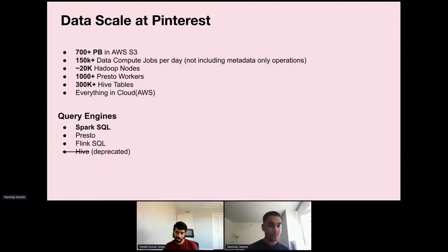To get started, one of the most interesting things is definitely the scale at which we operate. At Pinterest we have over 700 petabytes of data which is all in AWS S3. We roughly run more than 150,000 data compute jobs every day, and this is not including metadata operations. We have around 20,000 nodes, over a thousand cluster workers, over 300,000 Hive tables. All of our infrastructure is on AWS. We use the EC2 instances from AWS. We don't necessarily use any services from AWS.